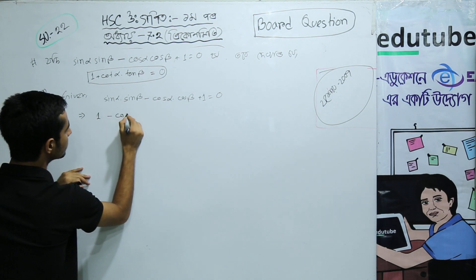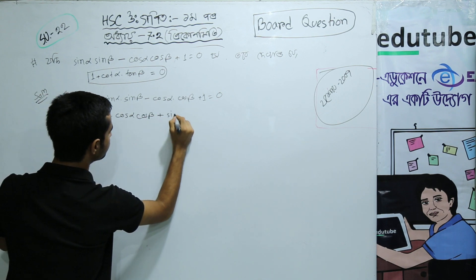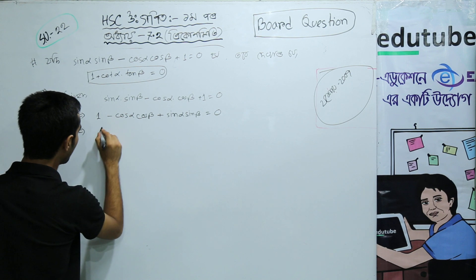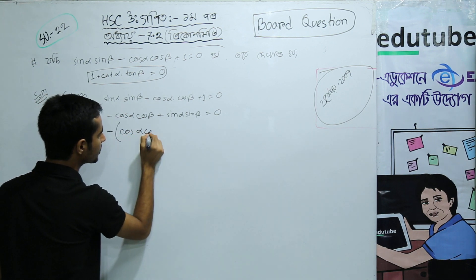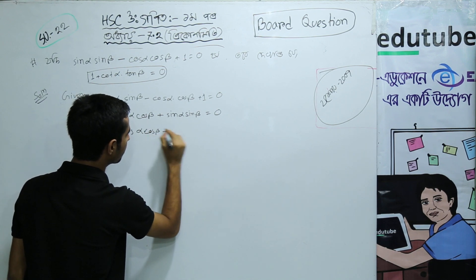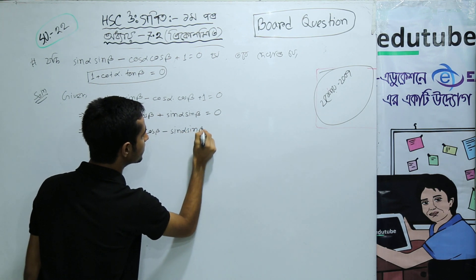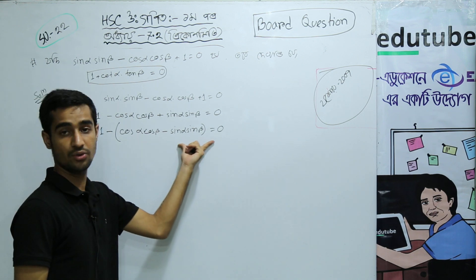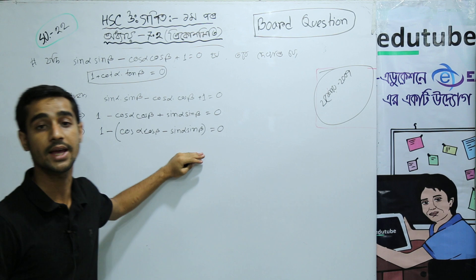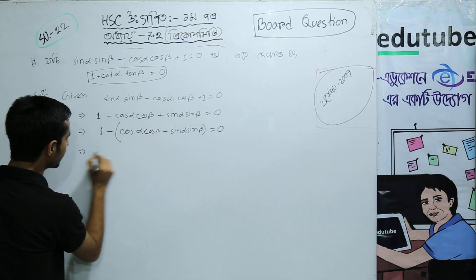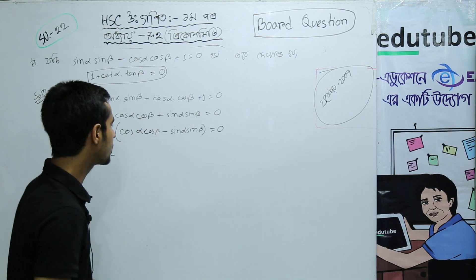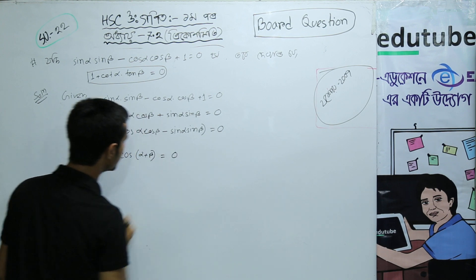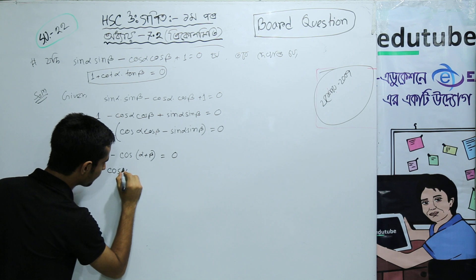Rearranging: 1 minus cos α·cos β plus sin α·sin β equals 0. That implies 1 minus (cos α·cos β minus sin α·sin β) equals 0. Using the formula, cos α·cos β minus sin α·sin β equals cos(α + β), so we get 1 minus cos(α + β) equals 0.